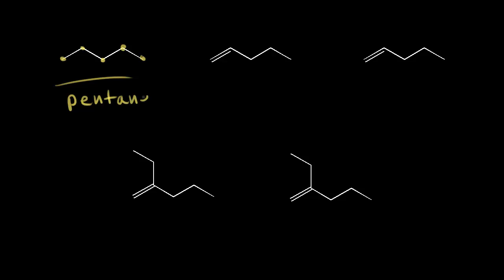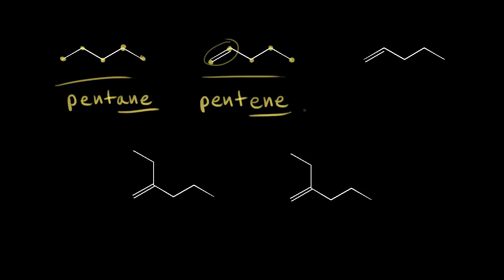So what do we do if we're trying to name alkenes? This compound has a double bond present, but there's also five carbons — one, two, three, four, and five. So we start with 'pent', indicating five carbons present, but since there's a double bond, we need to change our ending from -A-N-E to -E-N-E. So we'd call this molecule pentene.